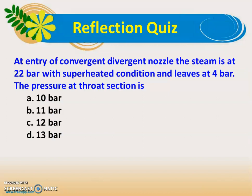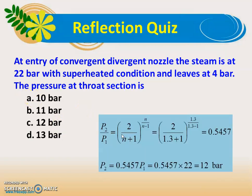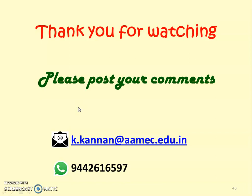At the entry of a convergent-divergent nozzle, the steam is at 22 bar in superheated condition and leaves at 4 bar. The pressure at the throat section is 12 bar. I stop here. Thank you for watching. Please post your comments in the comments box. If you have any queries, you can contact me through my email address or WhatsApp number. We will meet again with another video lecture in the steam nozzle series. Until then, bye.